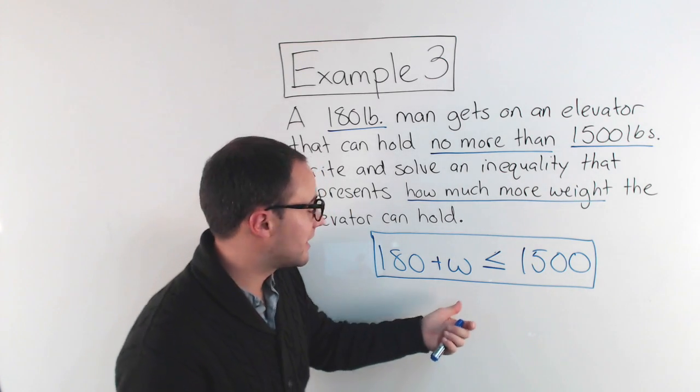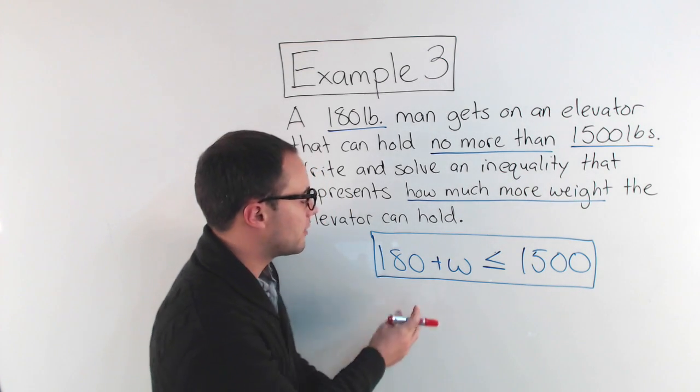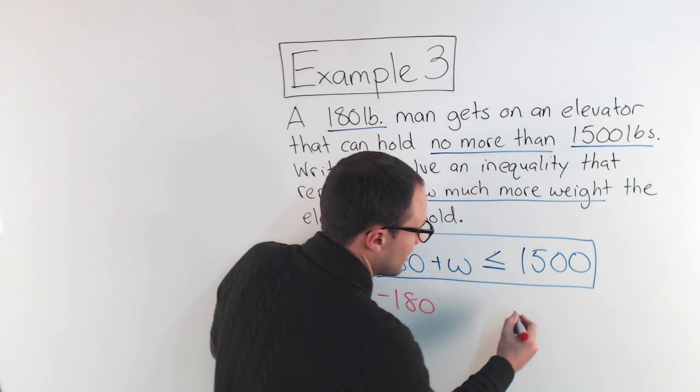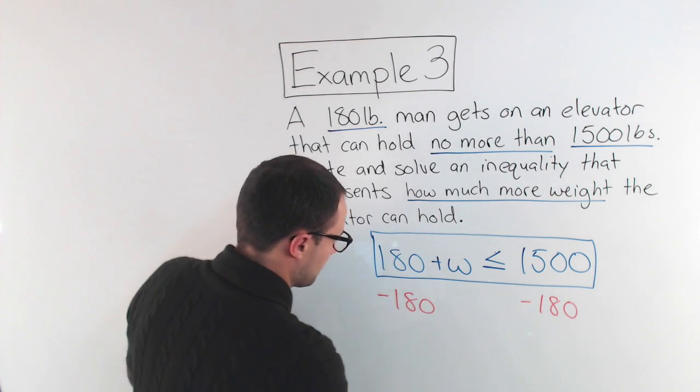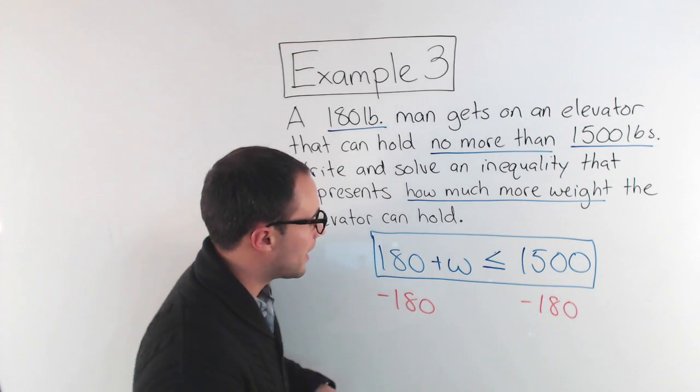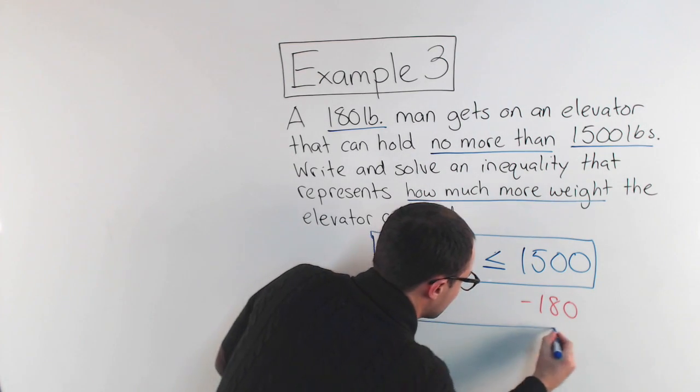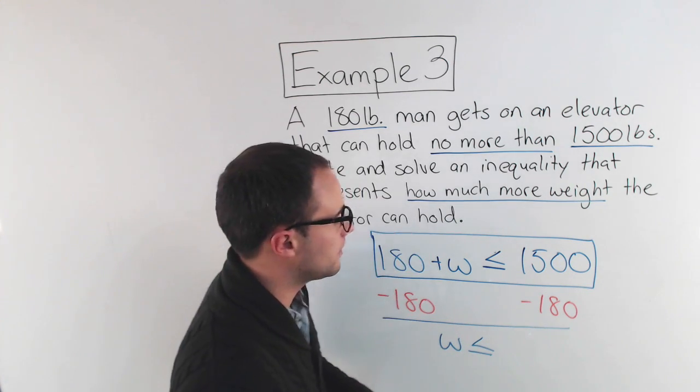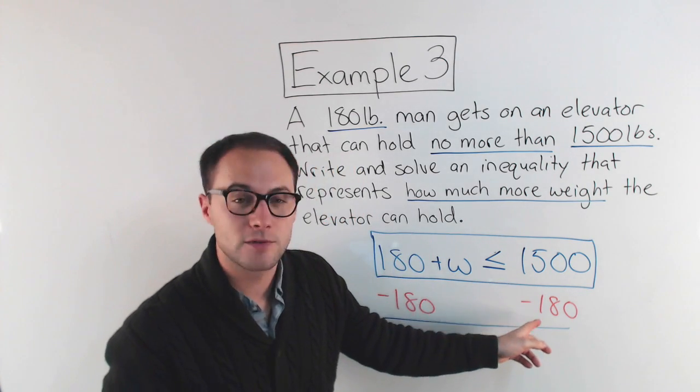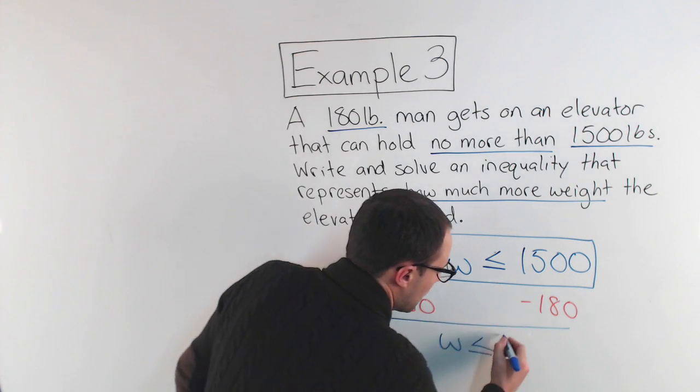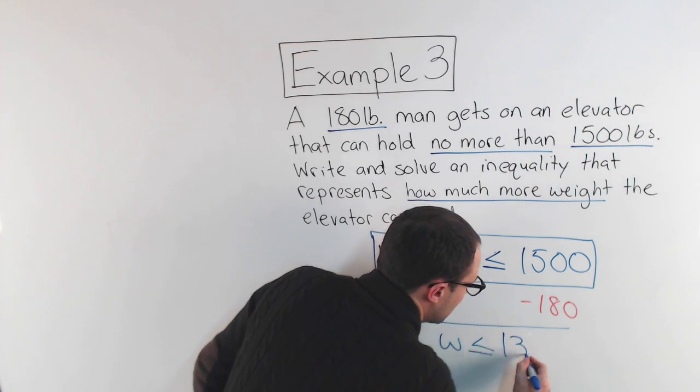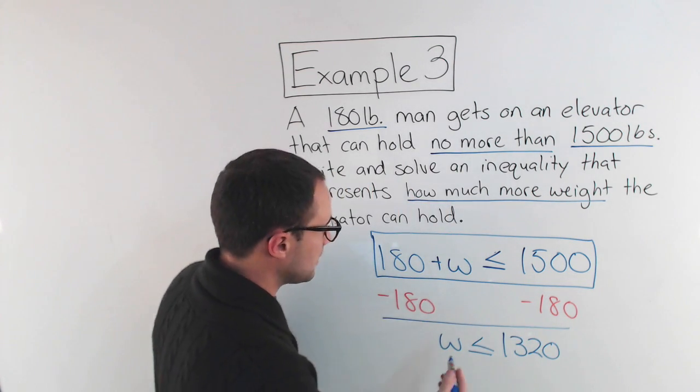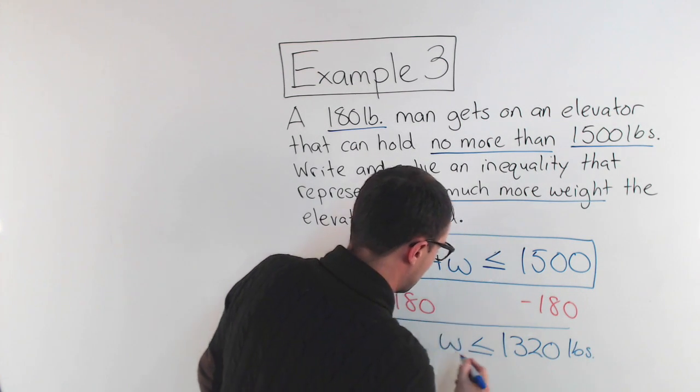So same thing. I'm trying to get the variable alone. I've got to get rid of that 180, so I'm going to subtract 180 from both sides. That 180, those go away. I'm left with W is less than or equal to 1,500 pounds minus 180 is going to be 1,320 pounds. So, and I'll put my units in there at the end.